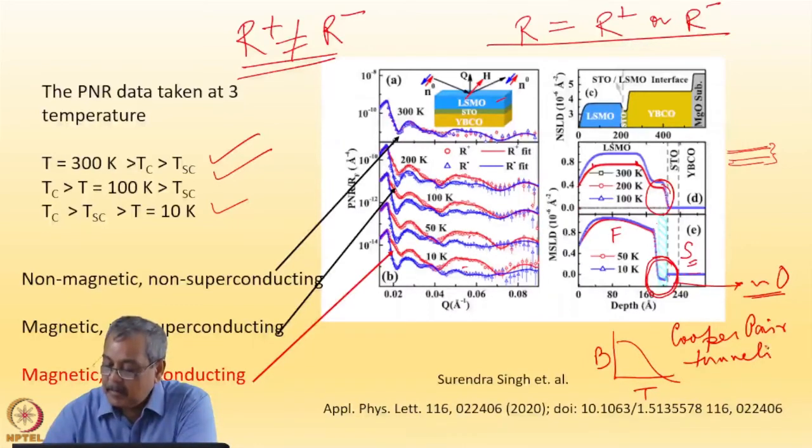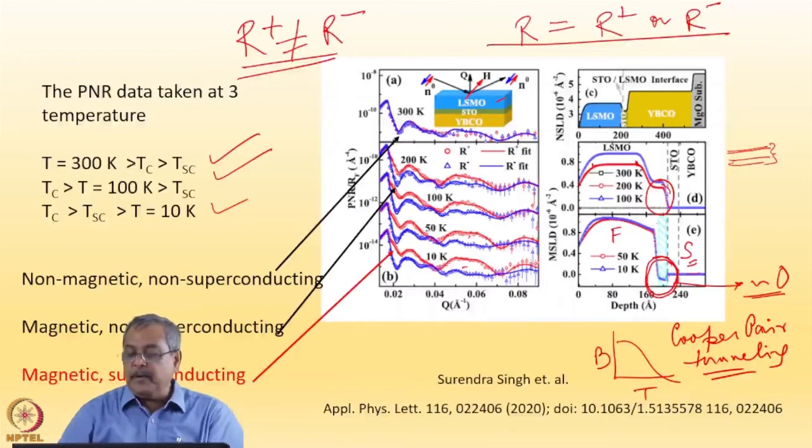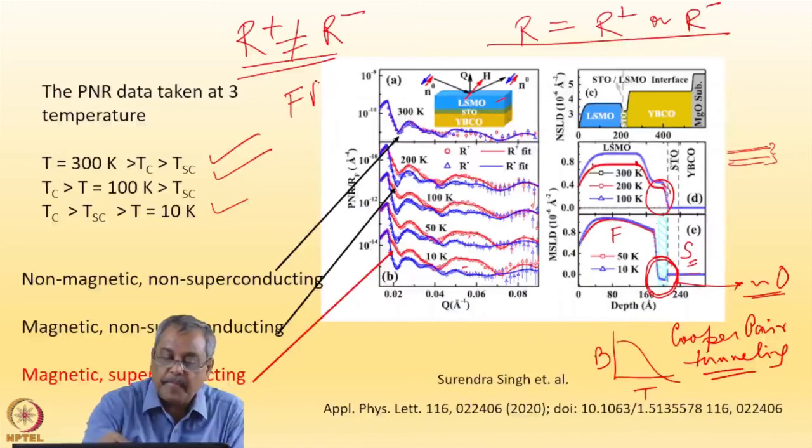This is a very interesting observation. As far as tunneling of Cooper pairs is concerned, which I have been able to understand by using polarized neutron reflectometry on this sample.